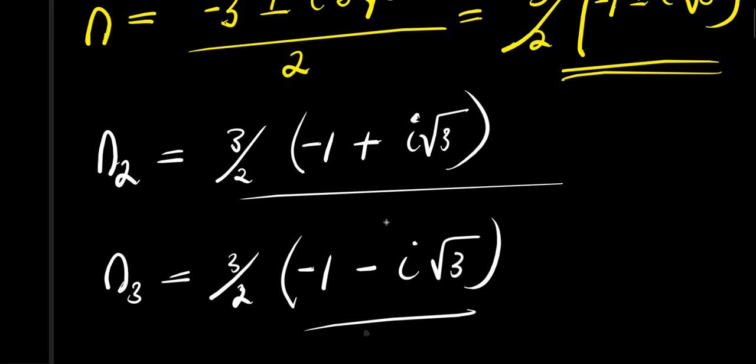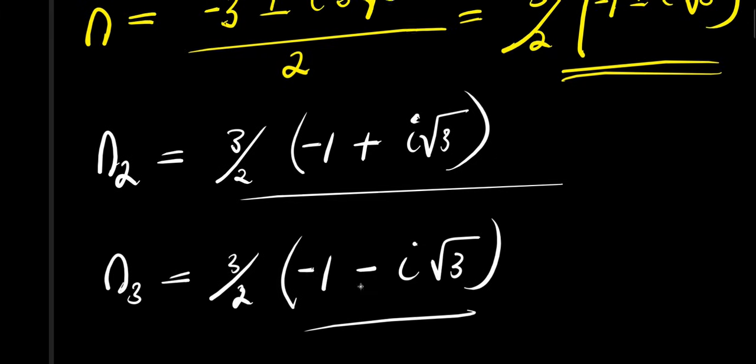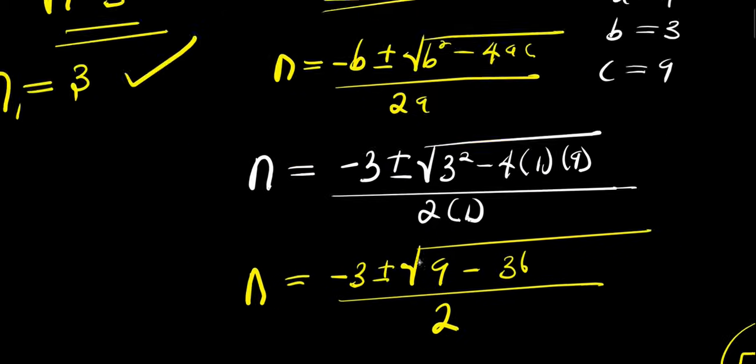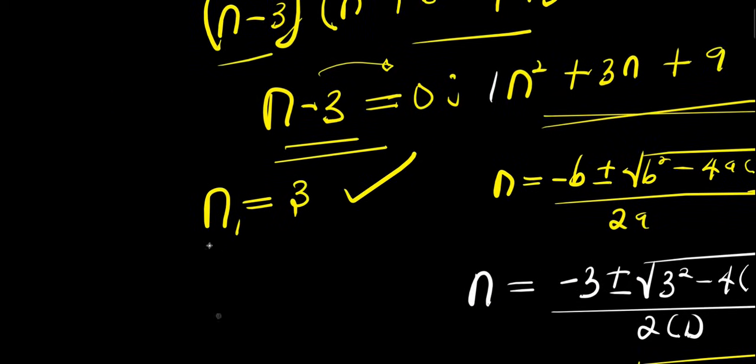So these are the two complex values for n. We also have one real value for n, which is n = 3.